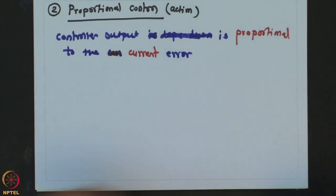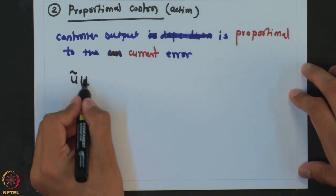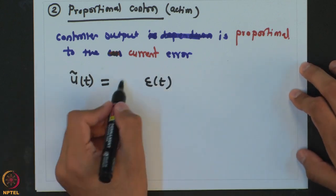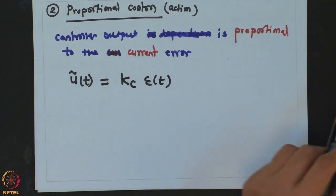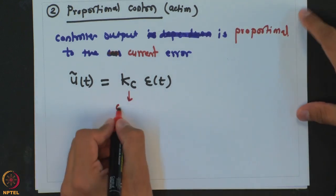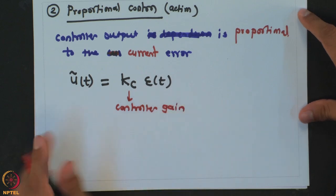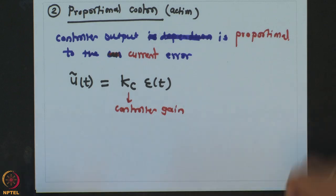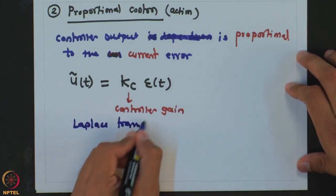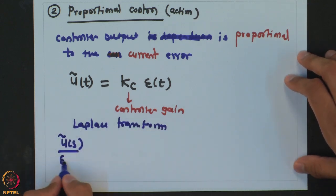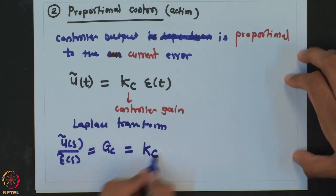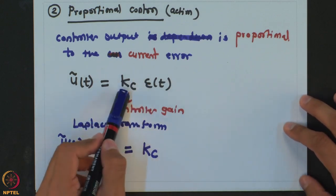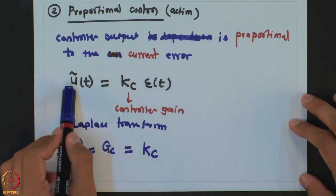In terms of the mathematical representation, the signal generated by the controller at any time will be proportional to the error at that time. That proportionality constant will be represented as Kc and is called the controller gain. To find the transfer function for this controller, if we take the Laplace transform, we can write that U(s) over epsilon(s) — the transfer function of the controller — is simply equal to Kc. So this is an instantaneous controller which takes action as soon as an error is detected; it gets multiplied by Kc and accordingly the output of the controller changes.